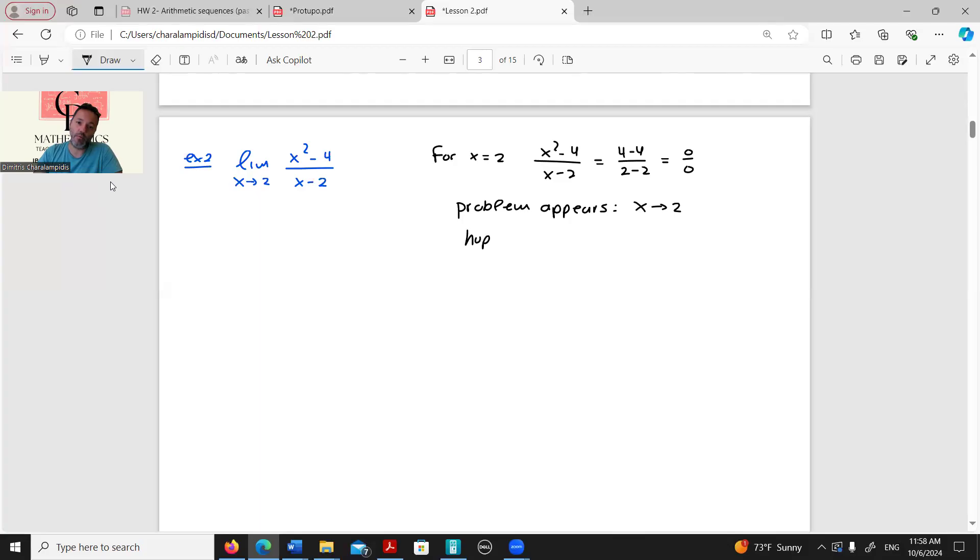This means that since the problem appears when x tends to 2, we hope that factorizing numerator and denominator separately will produce in both of them x minus 2. So x squared minus 4 is the same as x squared minus 2 squared, which is the difference of squares, which is equal to x minus 2 times x plus 2. For the denominator, we don't have to do anything else because we have already the thing we were hoping for.